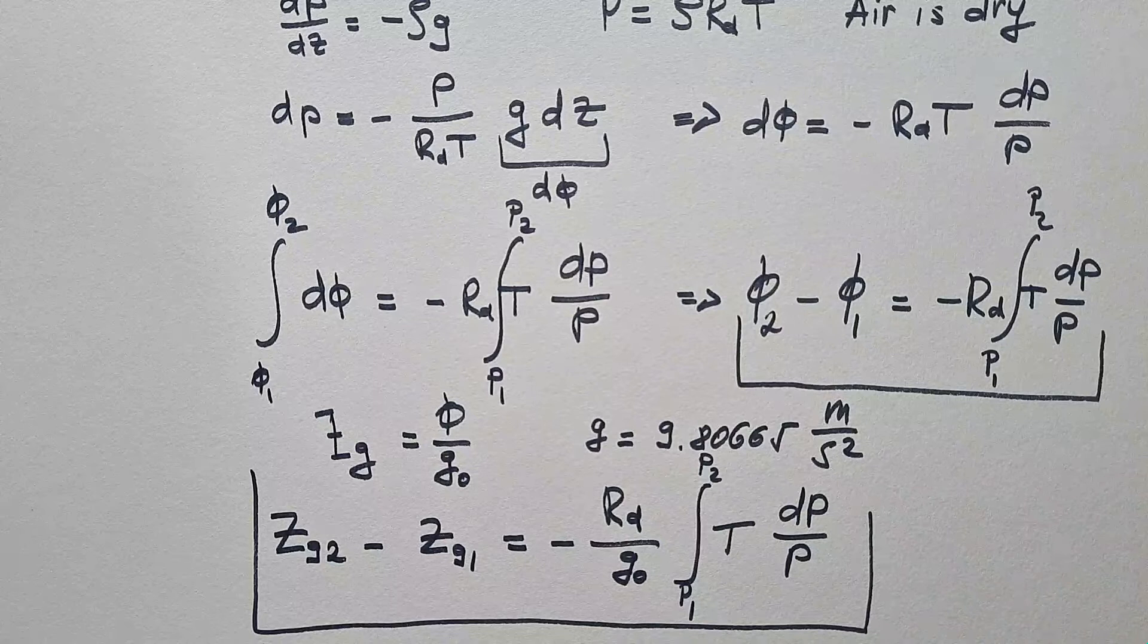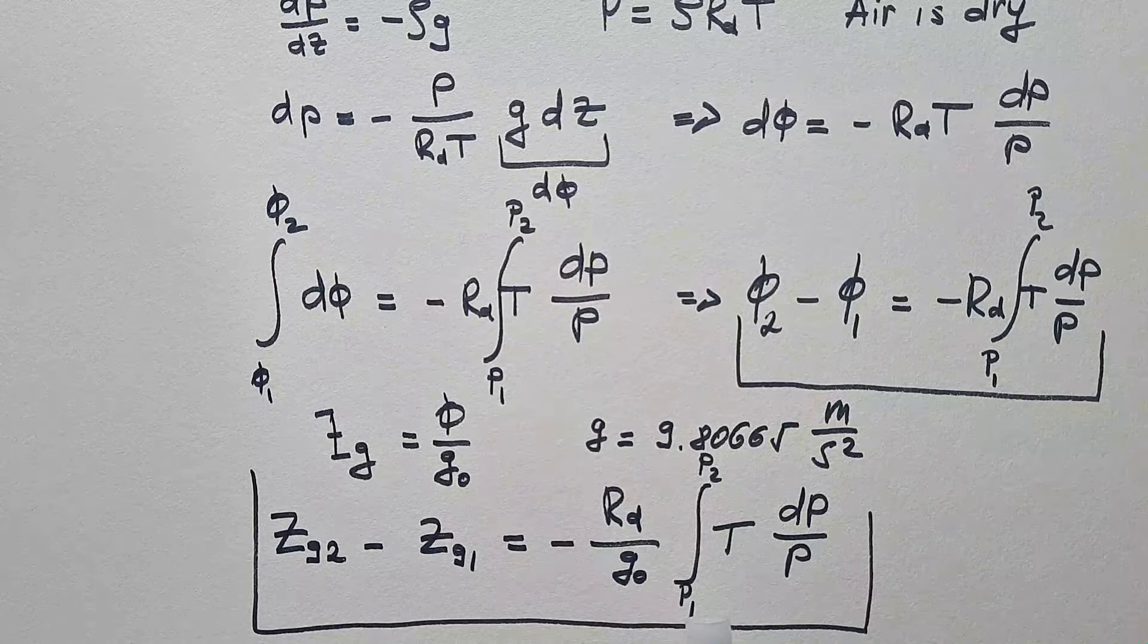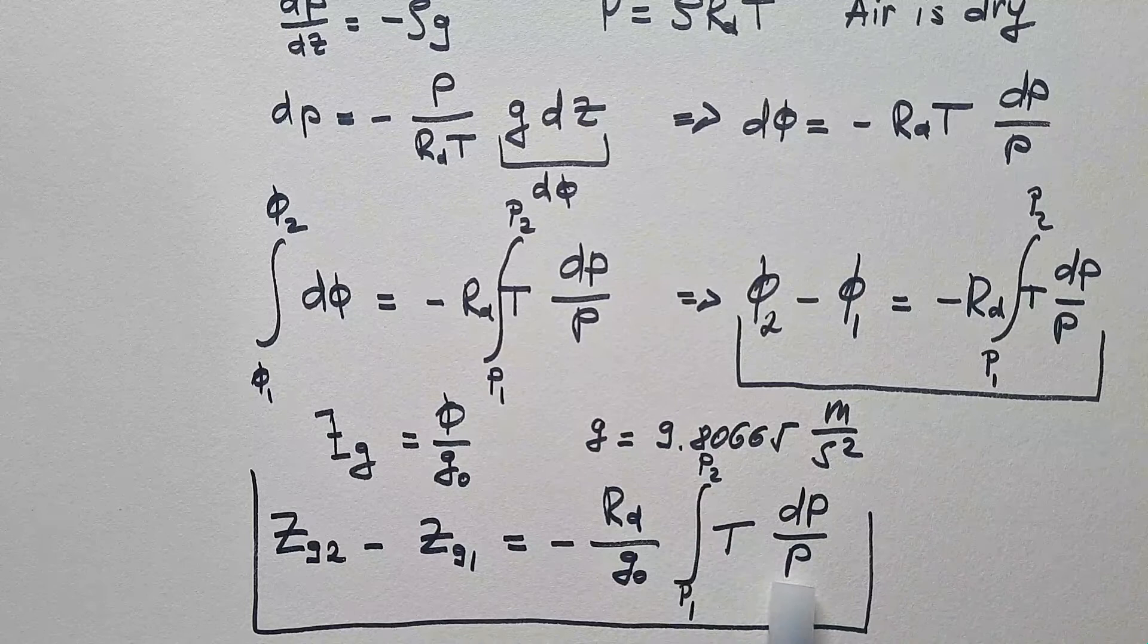We have pressure surface P1 and P2, but temperature depends on height and pressure. So, what is the profile of temperature between P1 and P2? If we assume that we just take average, then this temperature will go in front of the integral and this becomes logarithm of P, or when we plug in limits, it will be logarithm P2 over P1.